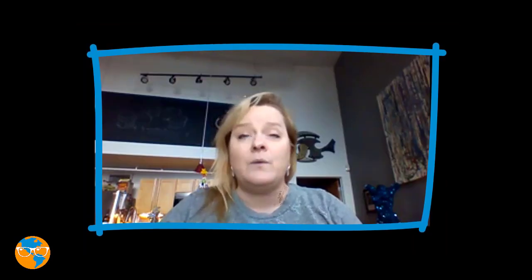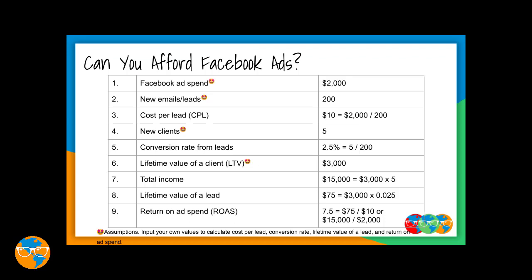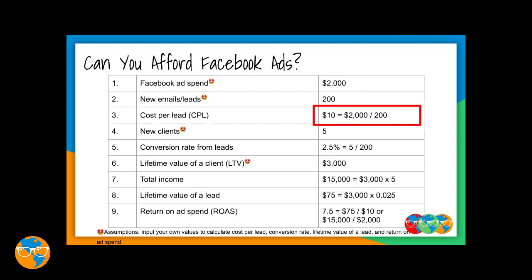Let's start with an example that will show you how to calculate these figures. In this chart, we are doing simple math, but it can get confusing if you aren't familiar with the terms. Let's assume you have spent $2,000 in Facebook ads and got 200 new leads from them into your sales funnel. That's a cost per lead of $10 — take that $2,000 ad spend divided by the 200 leads to get the cost per lead, or CPL as we like to call it.